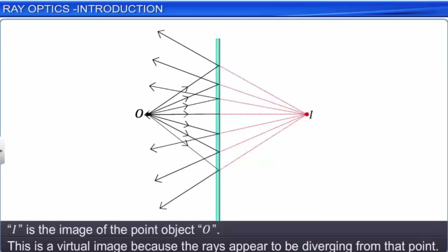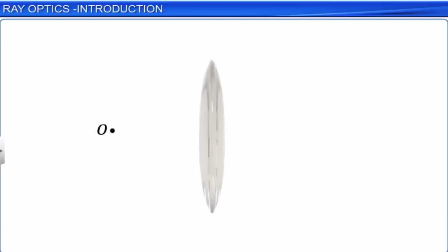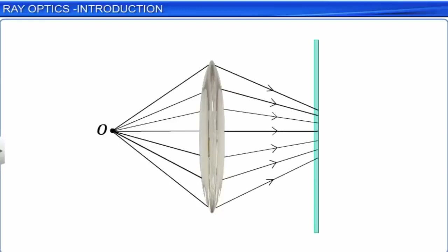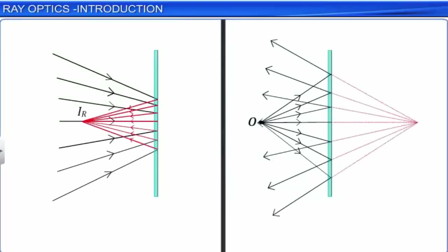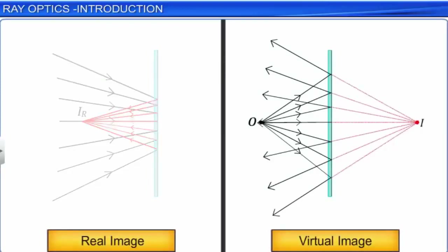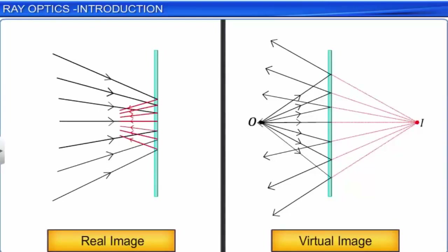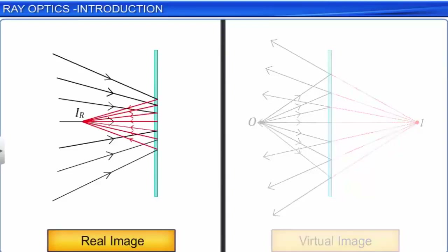If a converging lens is placed between the object and the mirror, light rays after passing through the lens form a converging beam. When this converging beam is incident on the plane mirror, after reflection they converge to a point and form an image IR. Since the image is formed by actual convergence of light to a point, it is known as a real image. Hence, we have two types of images: real and virtual. When light rays from an object after reflection or refraction actually meet at a point, it is called a real image. If the rays appear to diverge from a point, the image is called a virtual image.